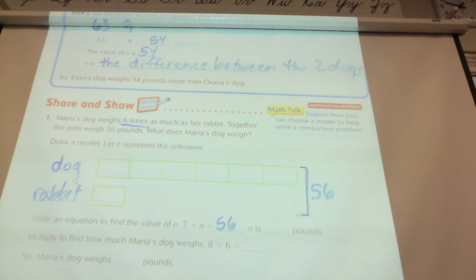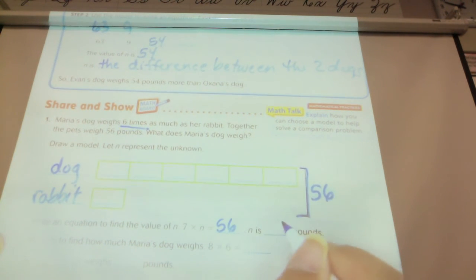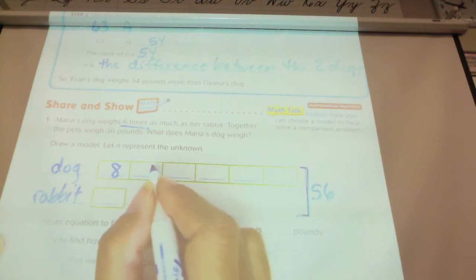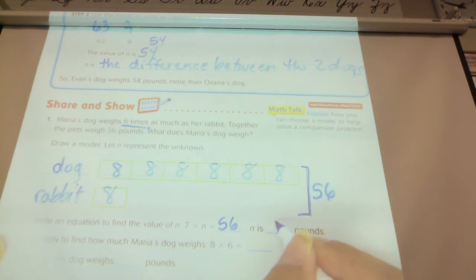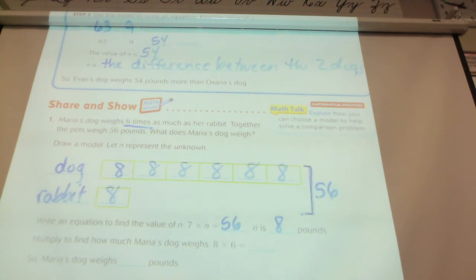What number times seven equals 56, class? Eight. Eight. So I'm going to put eights. And N is eight, we decided. So is eight my answer? No. Not necessarily.